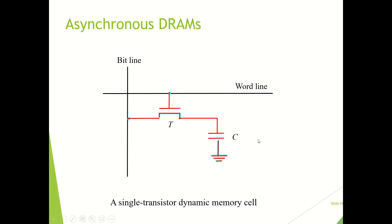This is the structure of a single cell — this is the cell and its main parts. In this cell we can store one bit of information. A single cell of asynchronous dynamic RAM consists of a transistor and a capacitor. There is also a bit line, which is used to supply power, and a word line, which is used to activate the cell.